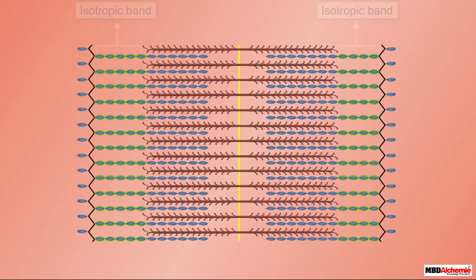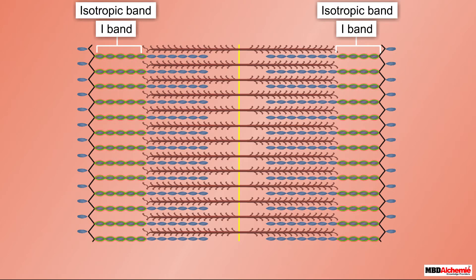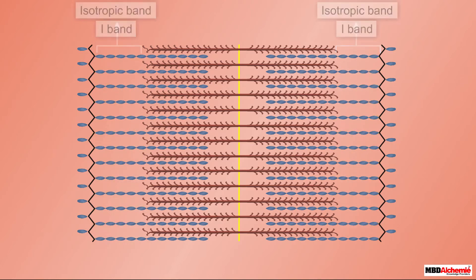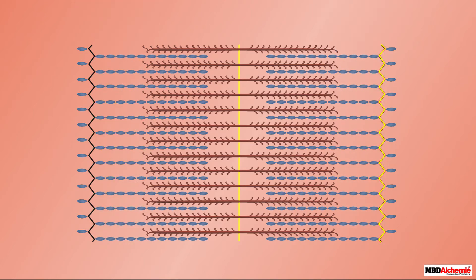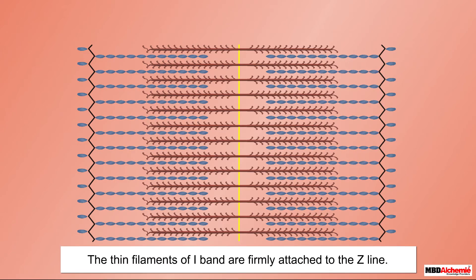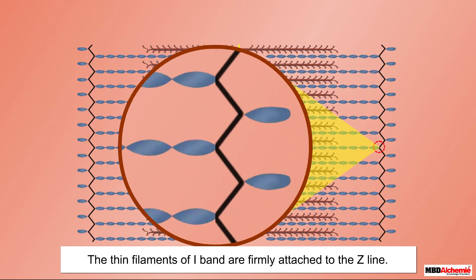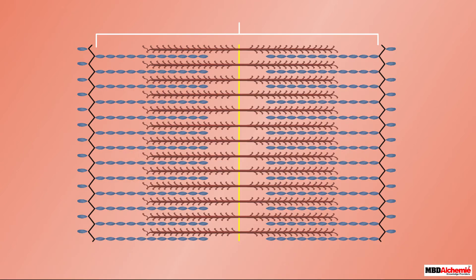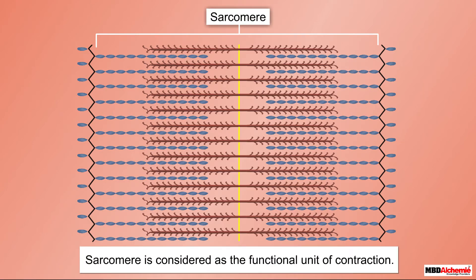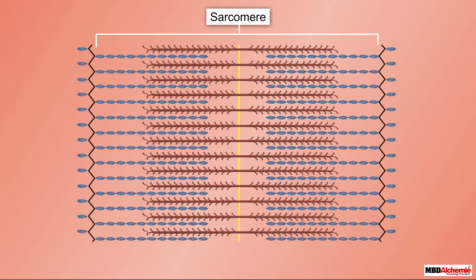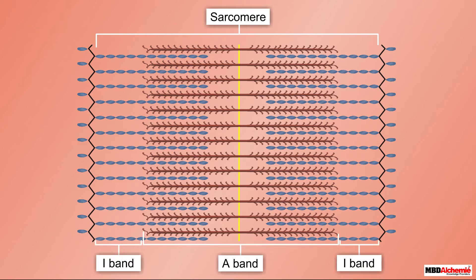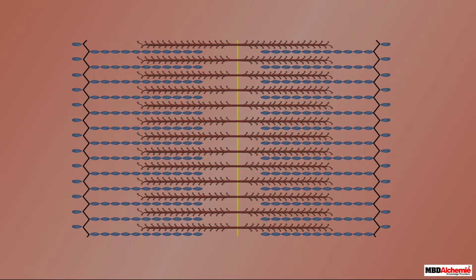The light bands, on the other hand, contain actin or thin filaments and are called isotropic or I bands. In the middle of the I band we can see an elastic fiber called the Z line. The thin filaments of the I band are firmly attached to the Z line. The portion of the myofibril between two successive Z lines is called a sarcomere, which is considered the functional unit of contraction. Thus a sarcomere consists of the A band and half of each adjacent I band.